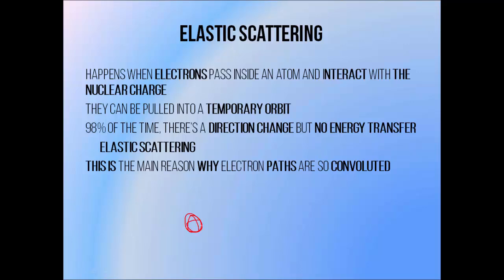Electrons don't just interact with other electrons. Atomic nuclei contain charged particles too, so if an electron passes close to an atomic nucleus it can interact with that as well. This most commonly occurs in the form of elastic scattering — elastic implying that there is no energy transfer. In this case, a high energy electron actually enters the atom and passes close to the nucleus. The attraction between the negative charge of the electron and the positive charge of the protons within the nucleus pulls the electron into a temporary orbit. 98% of the time, this electron is able to escape from this orbit without losing any of its kinetic energy, but it frequently results in a large directional change. It is because of these directional changes that these interactions are mostly responsible for the convoluted path that electrons take when passing through matter.